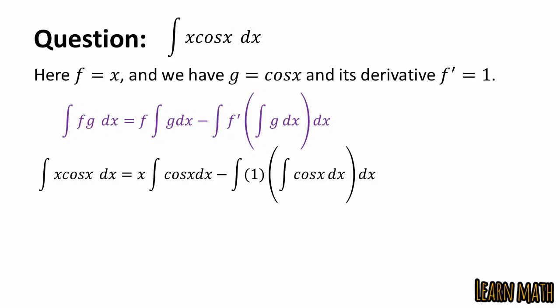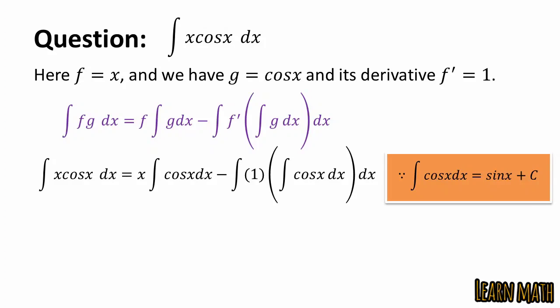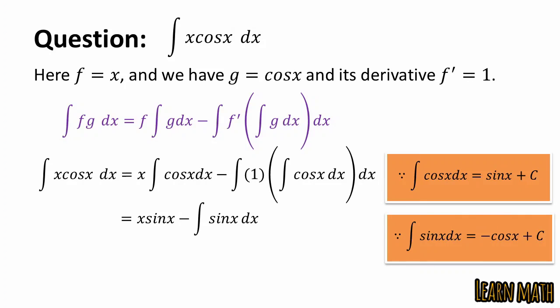The integral of x cos x dx equals x times the integral of cos x dx, minus the whole integral of 1 times the integral of cos x dx, all times dx. Since the integration of cos x dx equals sin x, we get x sin x minus the integral of sin x dx. The integration of sin x dx equals minus cos x, so the final result is x sin x plus cos x plus c.